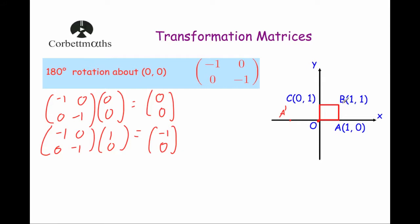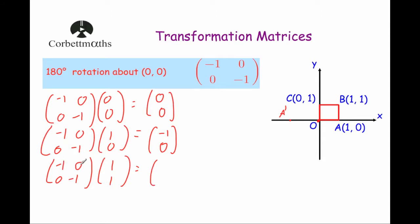Now we're going to multiply the point B, which is the point 1, 1, by the matrix minus 1, 0, 0, minus 1. If we're rotating it 180 degrees about the origin, it should move to down here, minus 1, minus 1. So let's have a look and see. Minus 1 times 1 is minus 1, 0 times 1 is 0, adding them together is minus 1. And then 0 times 1 is 0, minus 1 times 1 is minus 1. So it does — the point B moves to the point minus 1, minus 1, the point B dash.